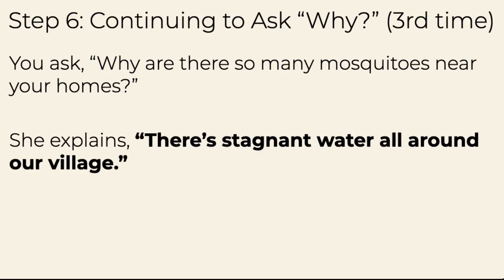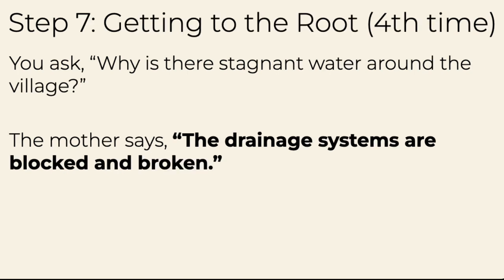When we ask why for the third time, you take the mother's input and ask: 'Why are there so many mosquitoes near your homes?' She says: 'There is stagnant water all around our village.' And this is where we're getting closer to the root cause.